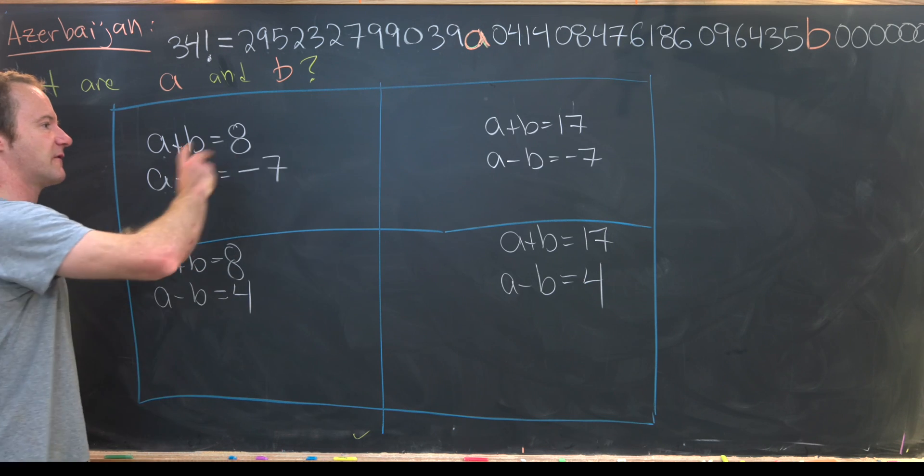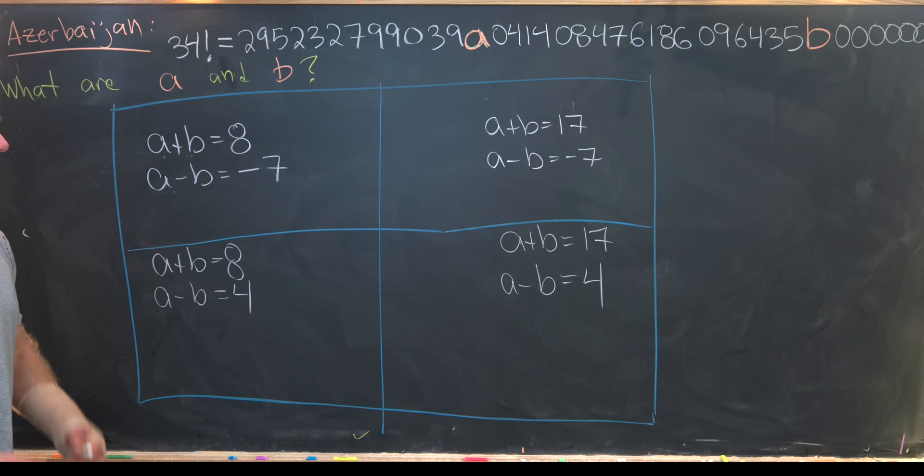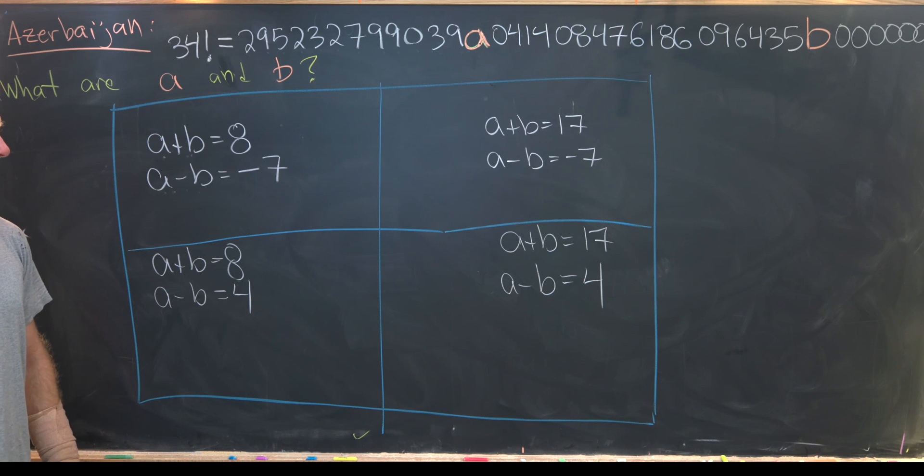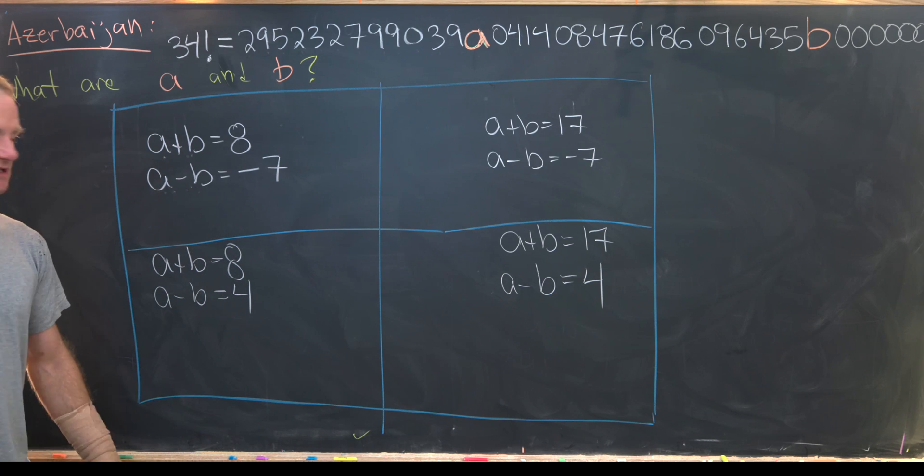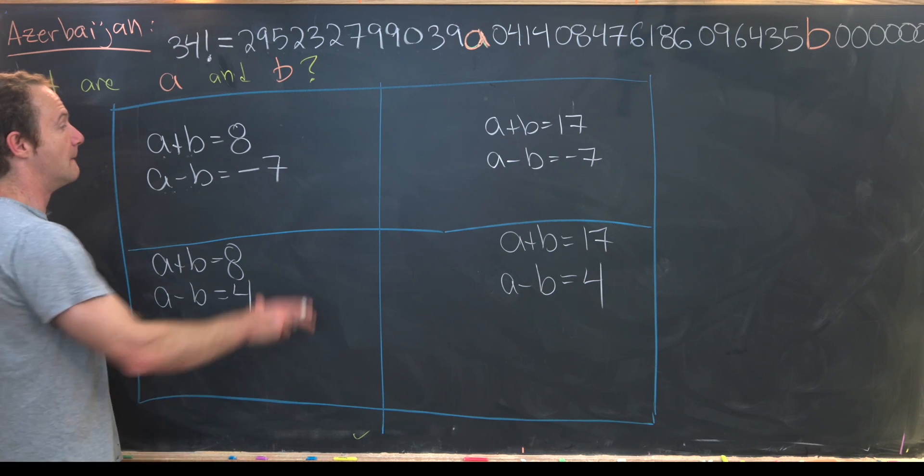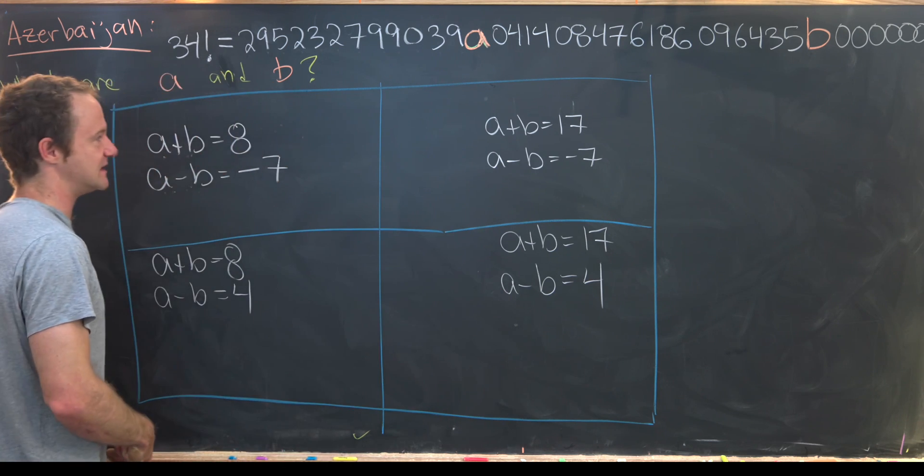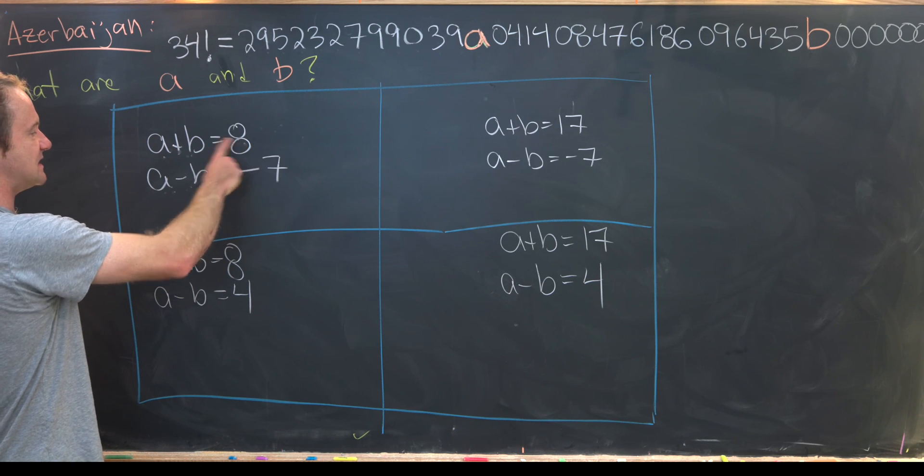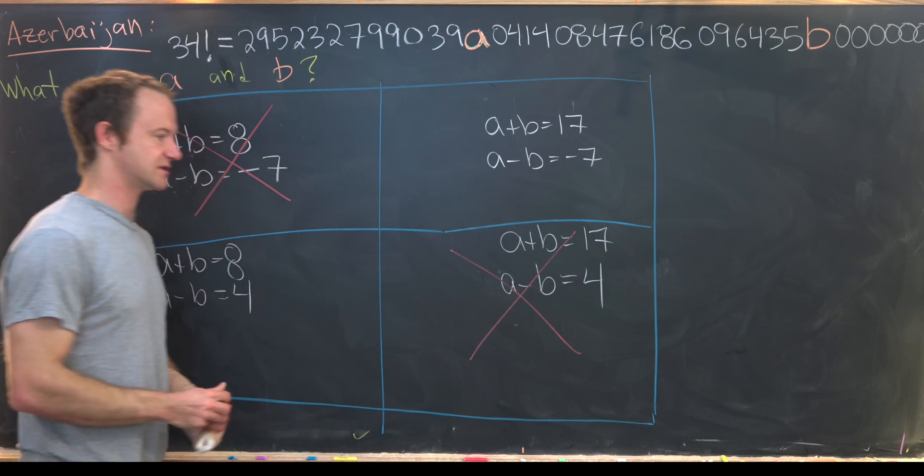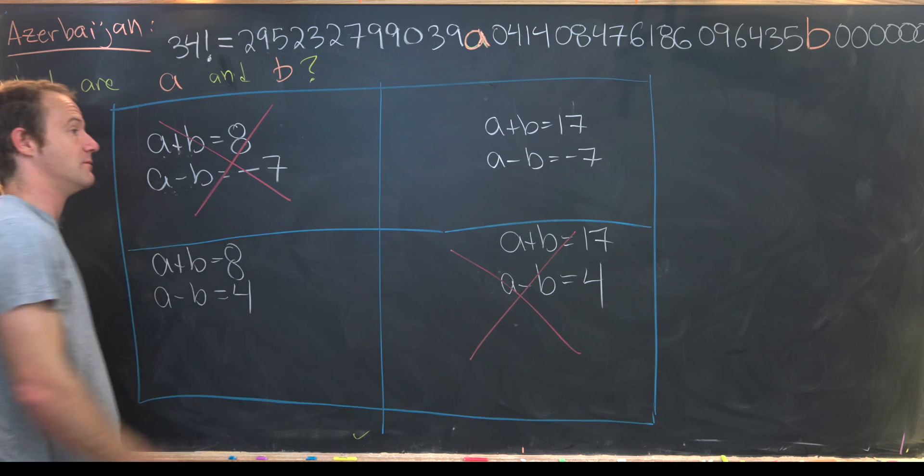So on the last board we got our problem down to the following four possibilities. Now we want to analyze each of these possibilities. So these two on the diagonal we can immediately argue to be impossible. And how can we do that? Well if a and b are integers then a plus b and a minus b are always of the same parity. In other words a plus b and a minus b are either both even or both odd. But that is not the setup that we have in these two cases. Here we have a plus b is even and a minus b is odd which is impossible. And here we have the opposite which is also impossible.